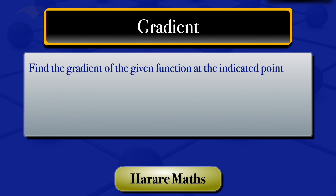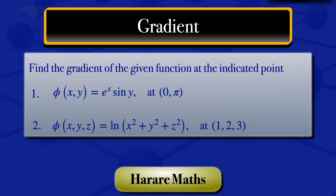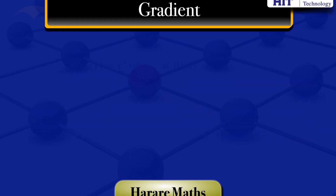In this video I am going to find the gradient of the function phi of xy equals exponent of x sine y at the point (0, π). And look at the function phi of xyz equals ln of x squared plus y squared plus z squared, then evaluate its gradient at the point (1, 2, 3).